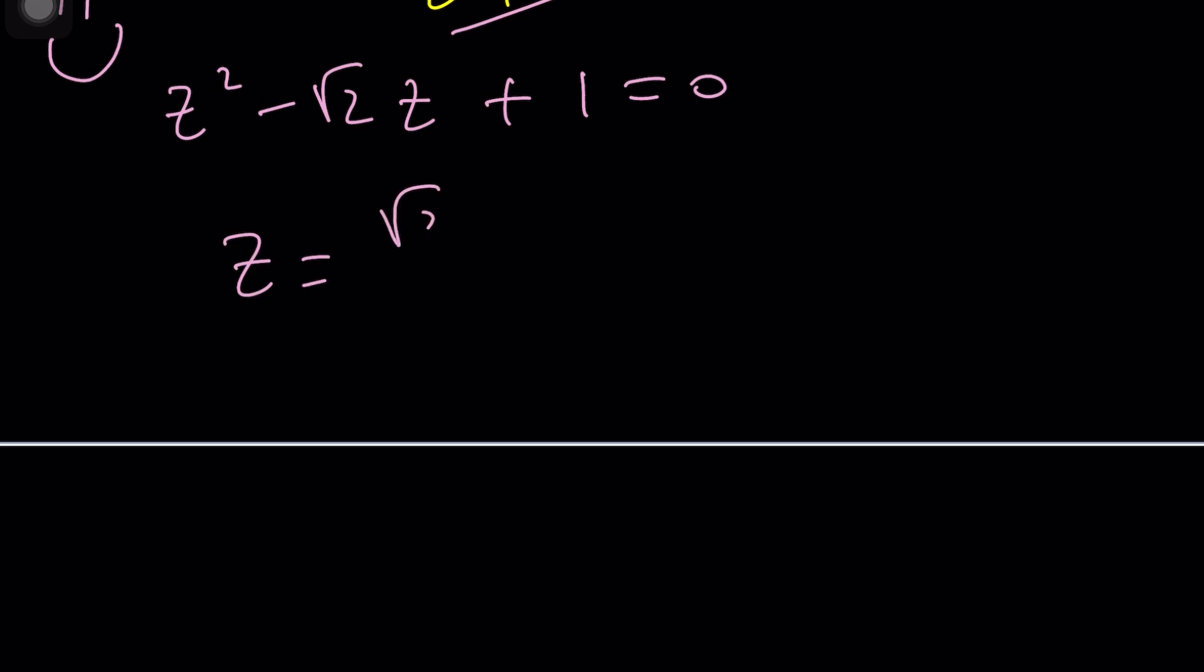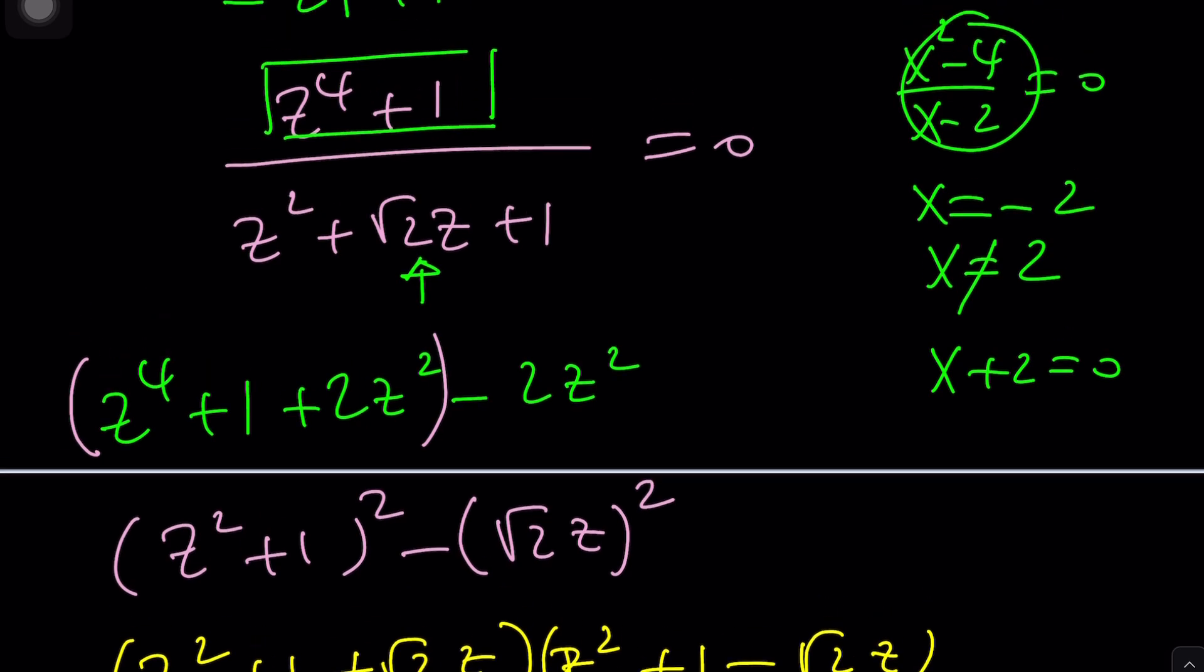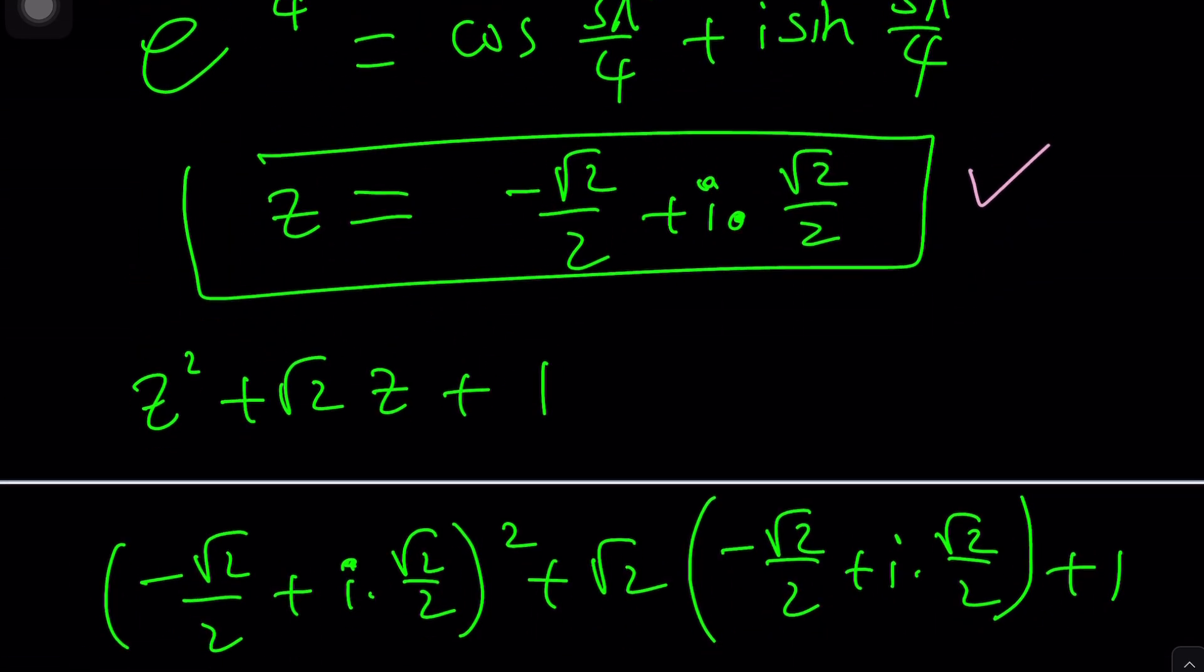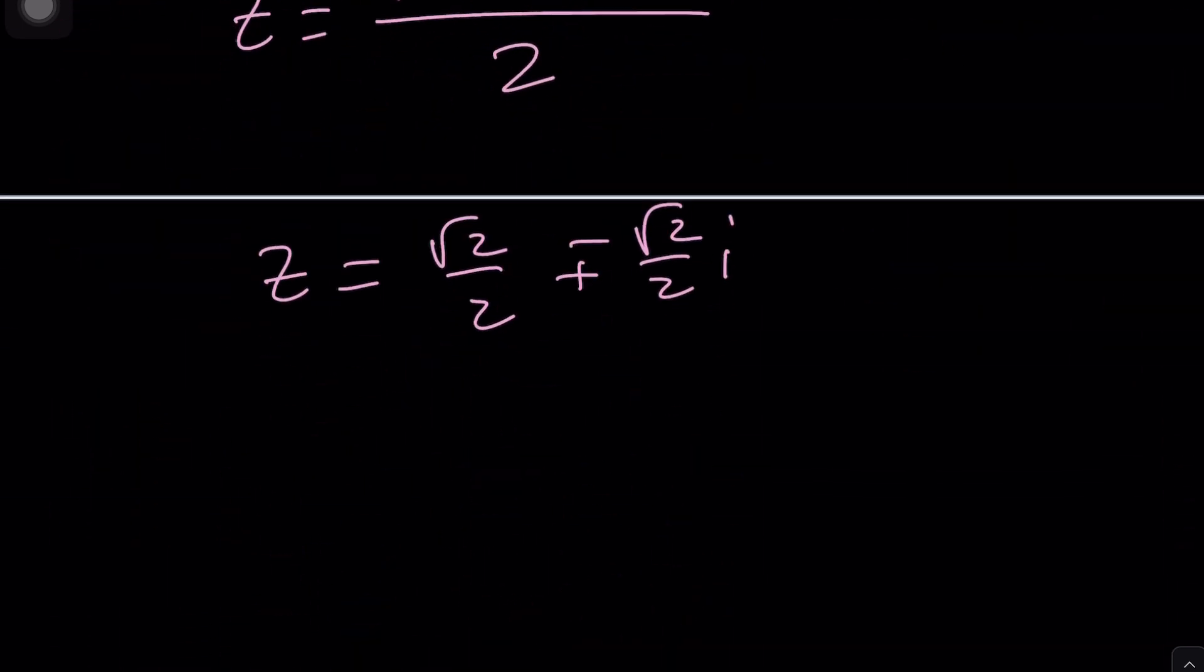Now let's go ahead and solve it. z equals negative b plus minus the square root of b squared, which is 2 minus 4. That's going to give you √2i divided by 2, and z should be negative √2 over 2 plus minus √2 over 2 times i. Isn't that one of the solutions that we found? Maybe not, I don't know. Maybe I made a mistake, but these are the solutions to our equation, and this brings us to the end of this video.